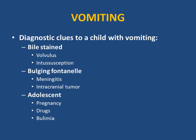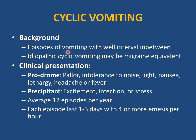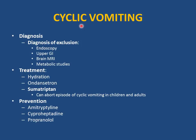Cyclic vomiting is a recurrent episode of vomiting where the child stays normal for weeks to months, then vomits again with no identifiable specific cause. It may be associated with migraine — a positive family history of migraine is very helpful. Clinical presentation includes a prodrome similar to head migraine: pallor, intolerance to noise and light, nausea, lethargy, headache, or fever before vomiting starts. Precipitants include excitement, infection, or stress. Average 12 episodes per year; each episode lasts 1-3 days with 4 or more emeses per hour.